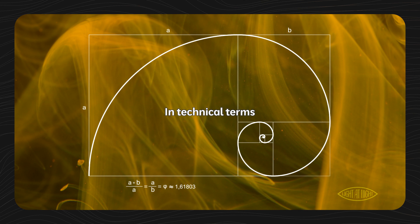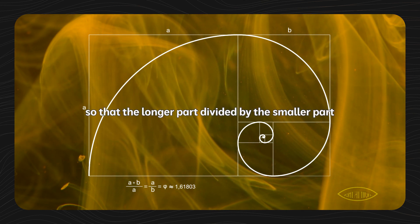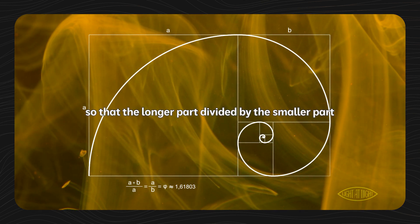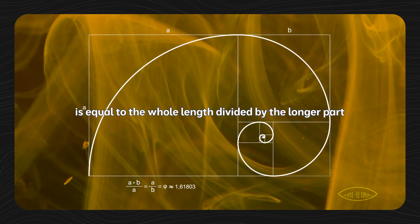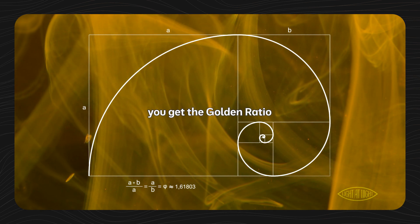In technical terms, if you divide a line into two parts so that the longer part divided by the smaller part is equal to the whole length divided by the longer part, you get the golden ratio.